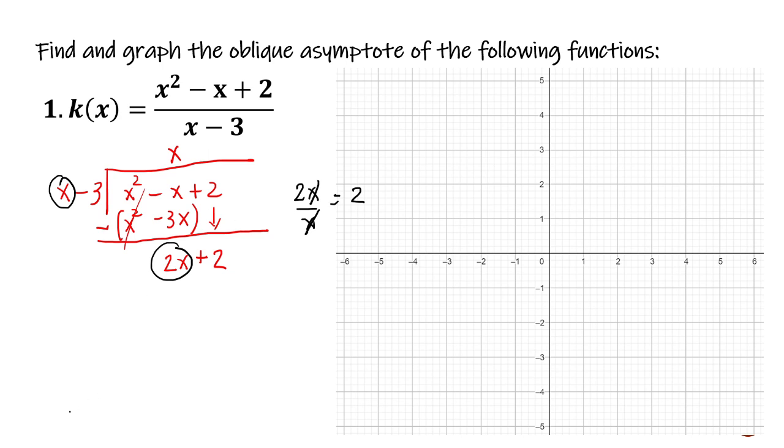So positive 2. Next is to multiply this to the divisor. 2 times x is 2x, 2 times negative 3 is negative 6. We are going to subtract again. 2x minus 2x is zero. Positive 2 minus negative 6, the answer is 8.